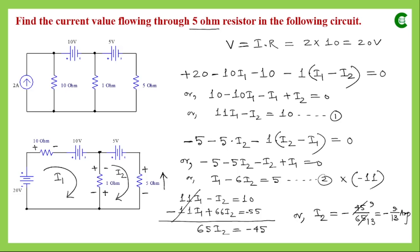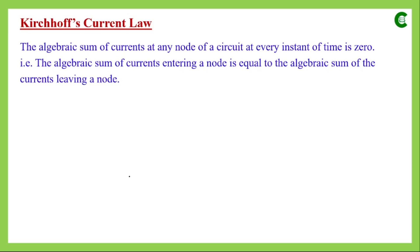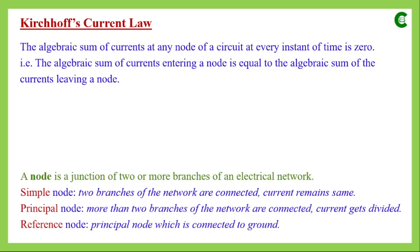As per our assumption, the current through the 5Ω resistor flows downward, but the negative result means it actually flows upward — in the anticlockwise direction — and its magnitude is 9/13 A. This is how we apply KVL to simplify an electrical network. Next, we learn KCL. As per KCL, the algebraic sum of currents at any node of a circuit at every instant of time is zero. A node is a junction of two or more branches of an electrical network.